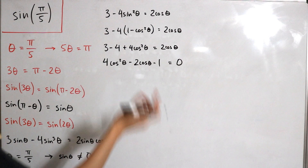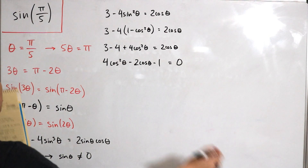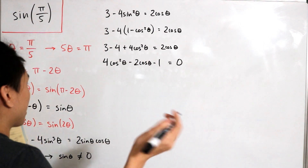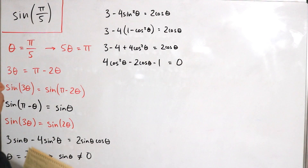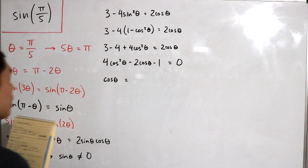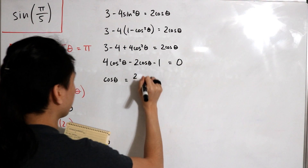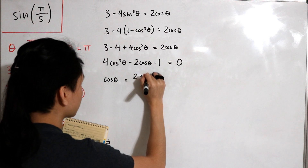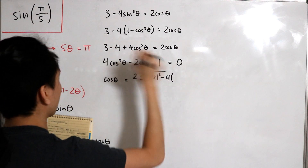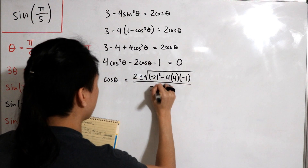As we can see, this is essentially a quadratic expression. We can use the quadratic formula to solve for cosine itself rather than θ directly. Plugging in a = 4, b = −2, c = −1, we get cosine θ equals negative b, which is positive two, plus or minus the square root of (negative two) squared minus four times four times negative one, all divided by two times four.